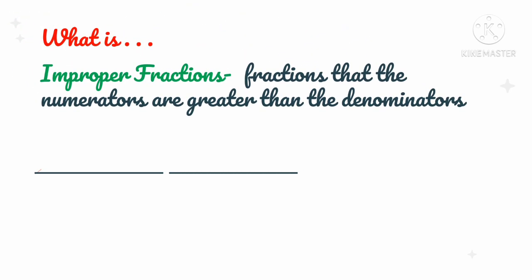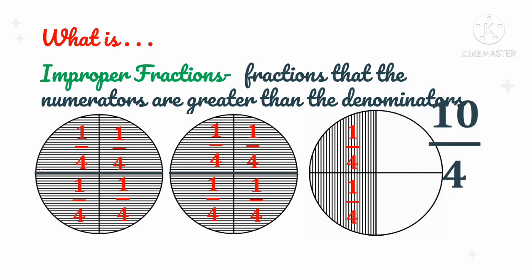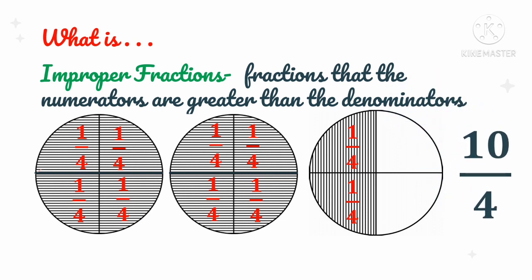Improper fractions are fractions wherein the numerators are greater than the denominators. So let's take a look at this example. As you can see, each pool is divided into four parts, and one part is equivalent to one-fourth. Counting all the shaded parts, we have 10 over 4. And 10 over 4 is an improper fraction since the numerator 10 is greater than the denominator 4. This is how we visualize an improper fraction.